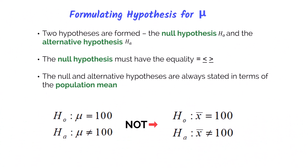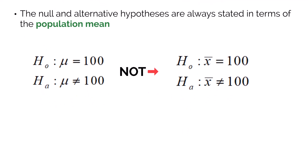In hypothesis testing, two hypotheses are formed: the null hypothesis, denoted by H sub 0, and the alternative hypothesis, denoted by H sub A. The null hypothesis will always have the equality sign in it, whether it is equals, less than or equals, or greater than or equals. Hypotheses are always stated in terms of the population mean because we are hypothesizing what's going on in the population. Again, this is because we can't study the entire population, so we use samples to understand it.